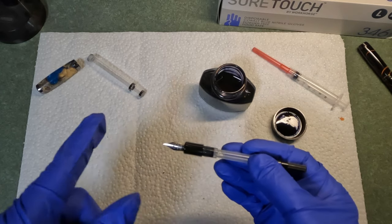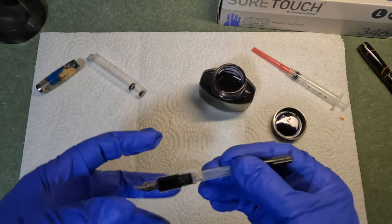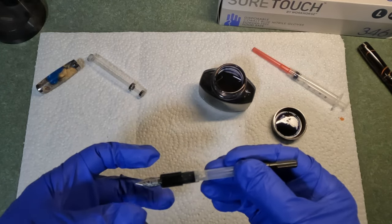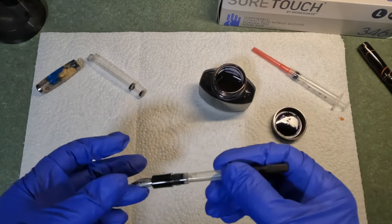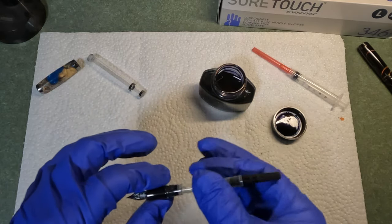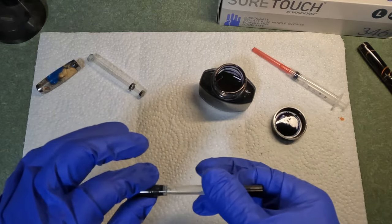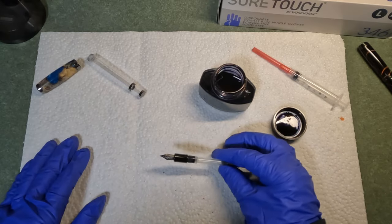Downside of that is your nib is now covered with ink. Everything is flooded with ink down on this end. You're going to blot it off with paper towel. It gets very very messy doing it that way. And I don't like to dip that end of my pen in the ink. So that's option one, the nib dip method.